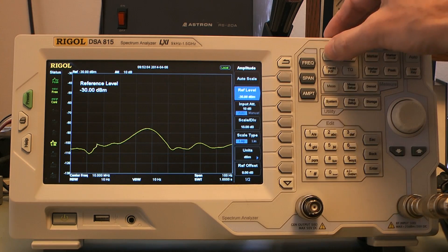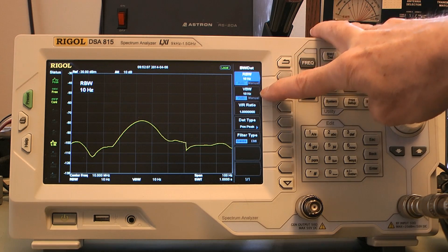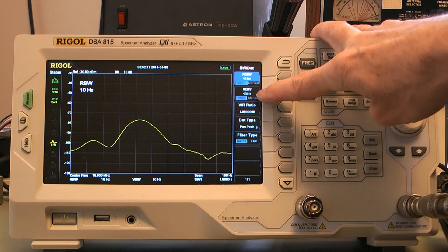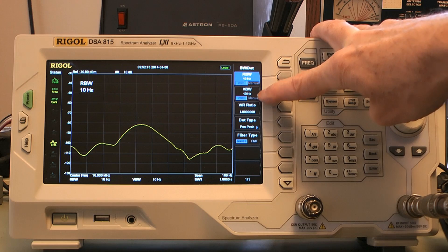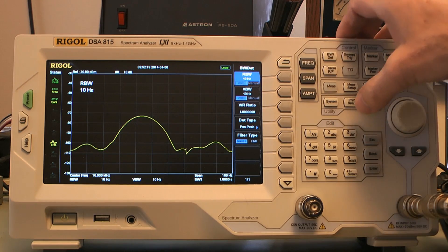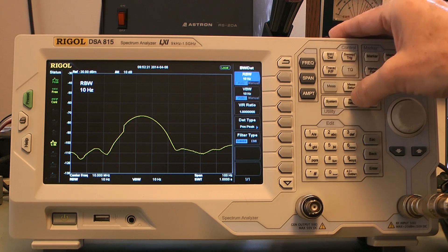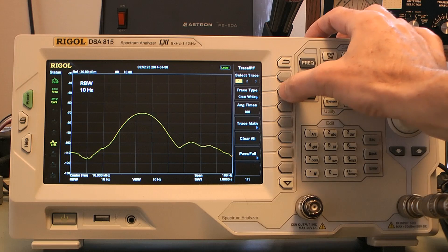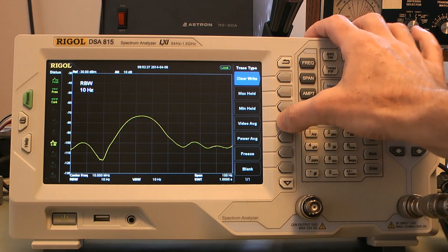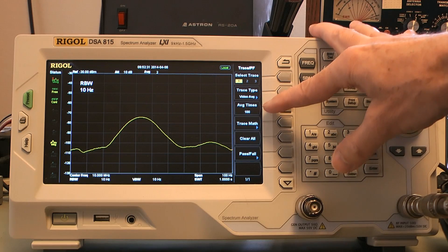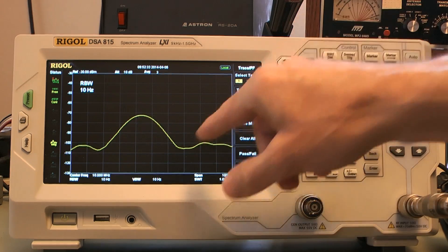I'm going to set my resolution bandwidth down to 10 hertz. I'm going to leave my video bandwidth at 10 hertz as well so that I don't have the extra delay in there. Then I'm going to turn on video averaging. So I'm going to go to Trace, Trace Type, Video Average. And I have this set to 100. Just any random number is probably fine.